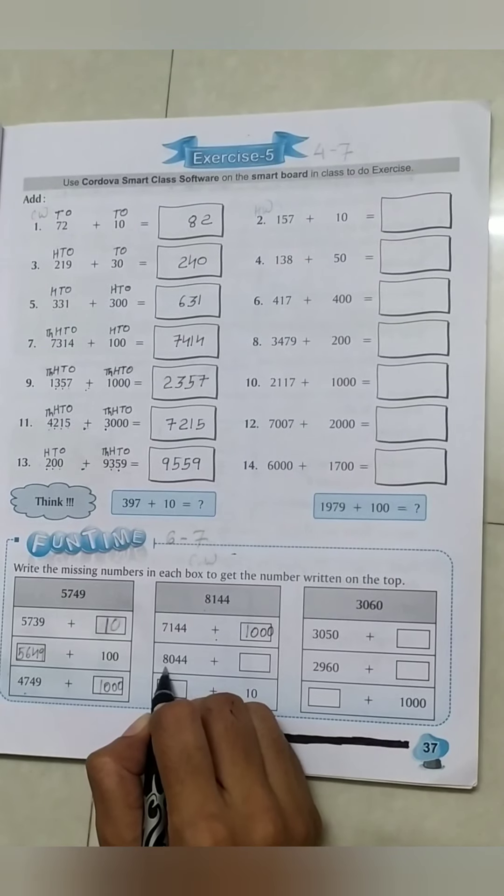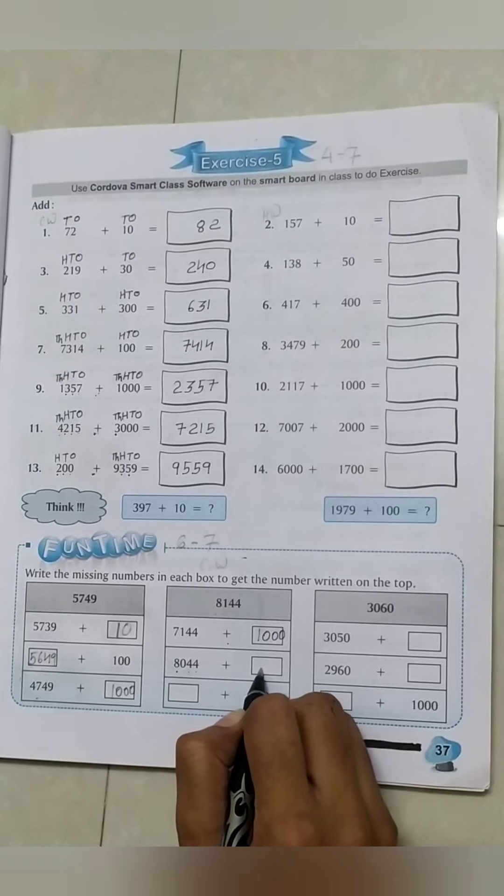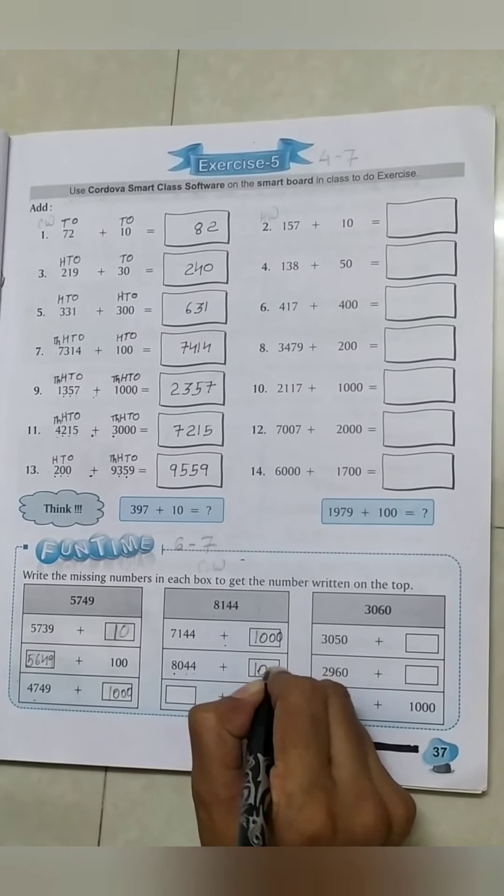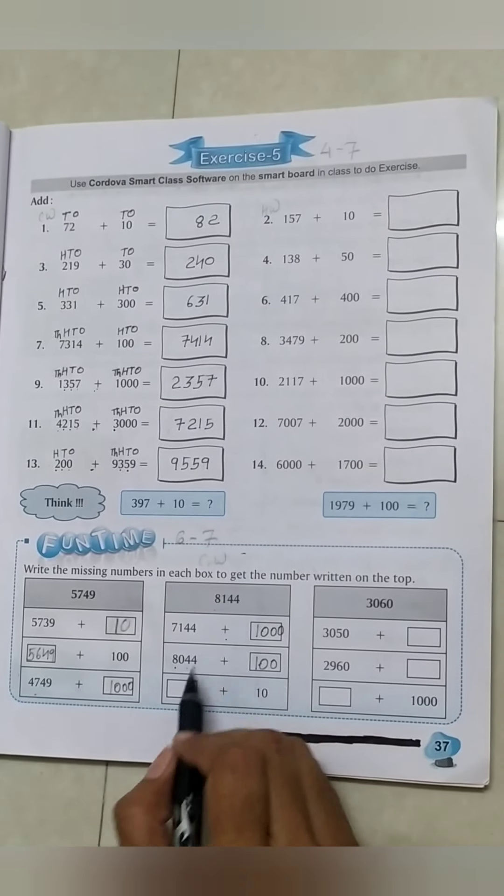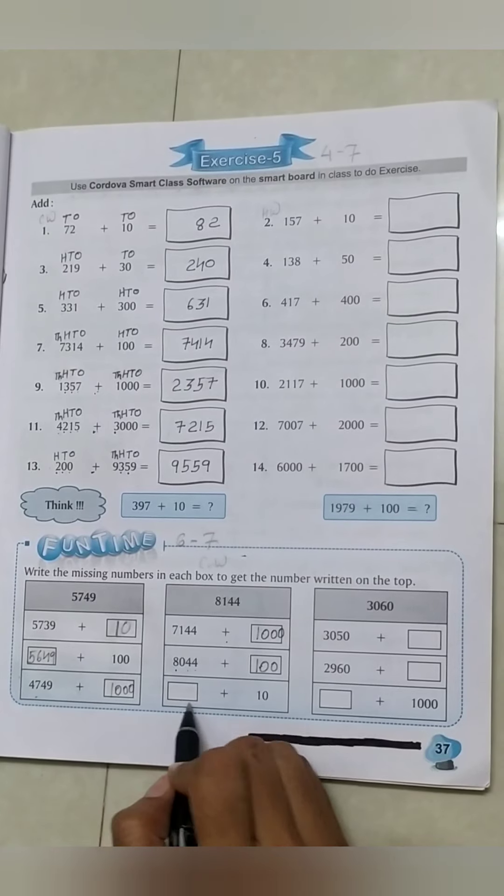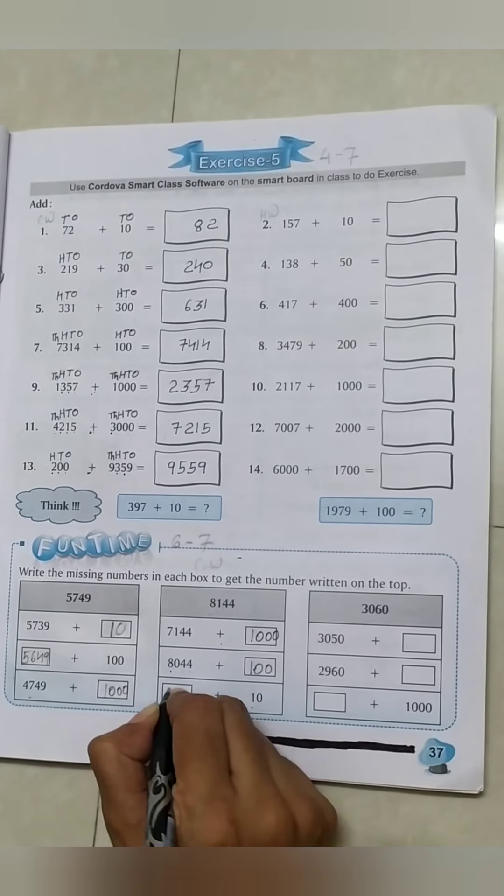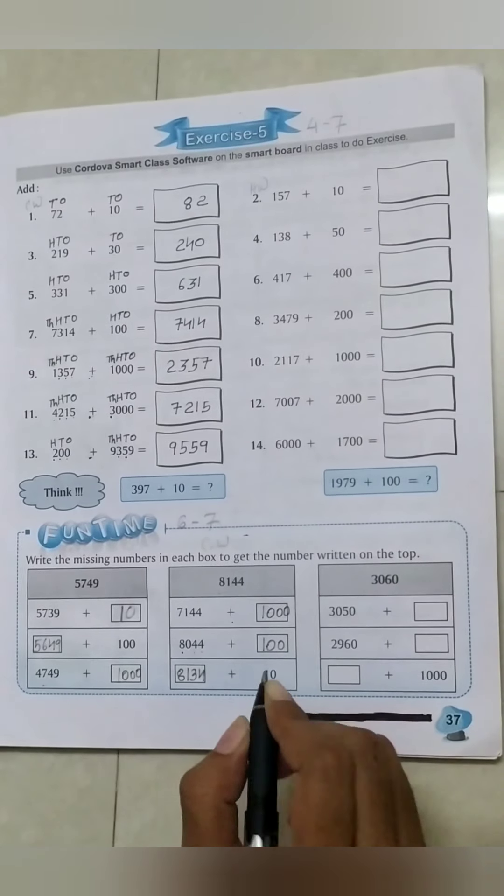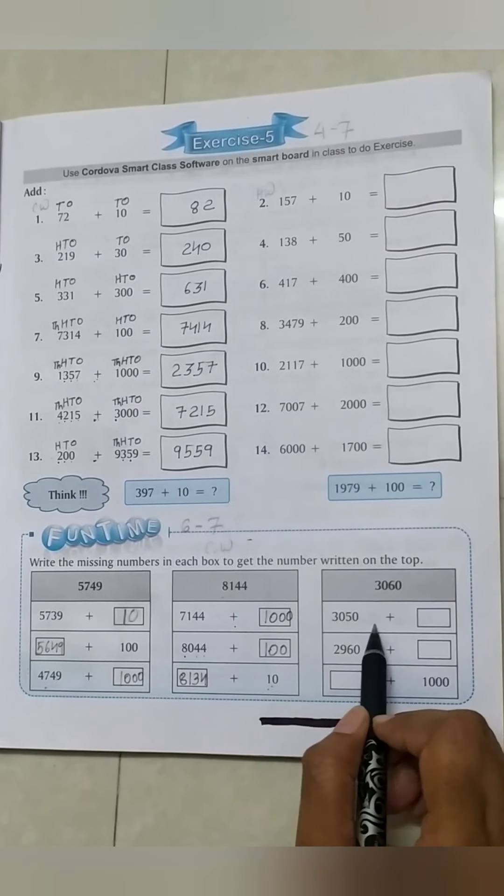Blank No. 2: 8044 plus blank. If we add 100, we can get answer 8144. Blank No. 3: blank plus 10. This is 8134 plus 10 equals 8144.